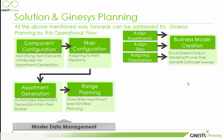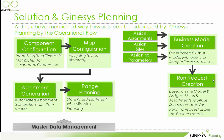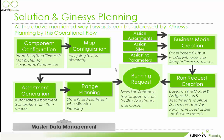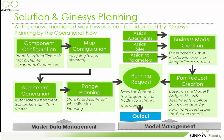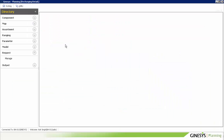We have discussed the business model, assignment of parameters, and assortments. Next is request creation. A request is basically the creation of a subset of the defined structure — identifying the site assortments. We give it a name, for example 'Request 0011,' and specify whether it is a repeated scheduler or a one-time run.